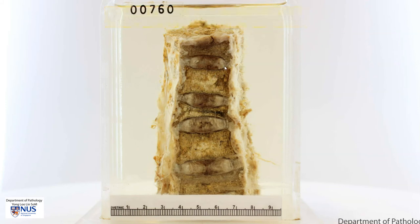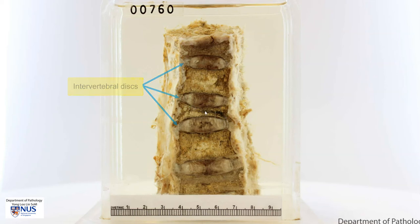It is also important to point out that the intervertebral discs appear somewhat swollen or thickened and they have this biconvex shape, which contributes to this concave appearance of the vertebral bodies.